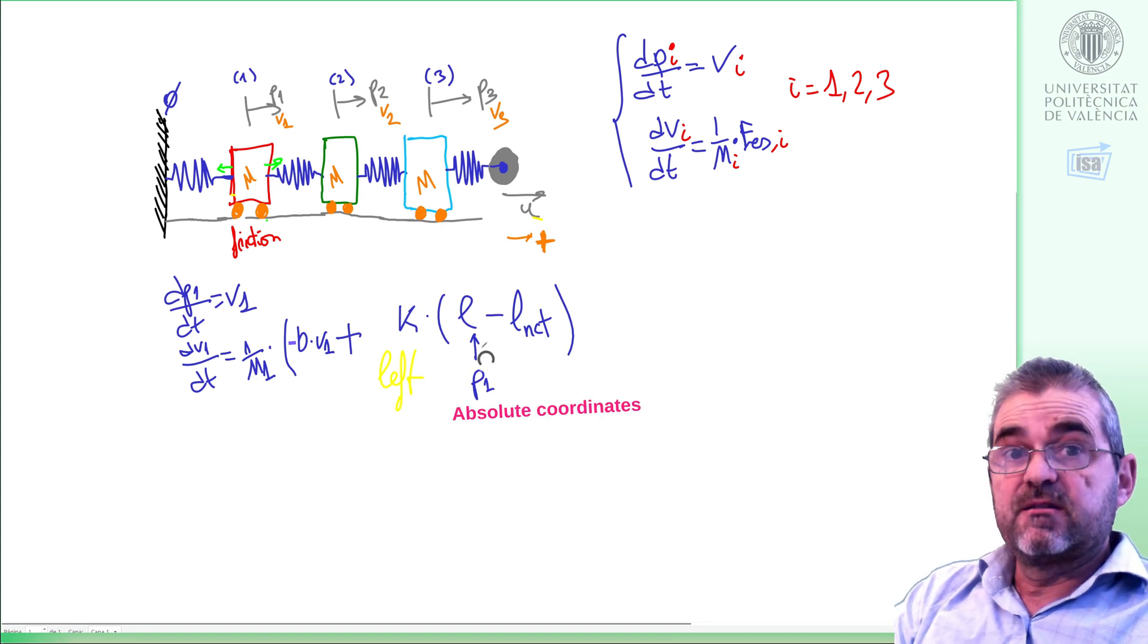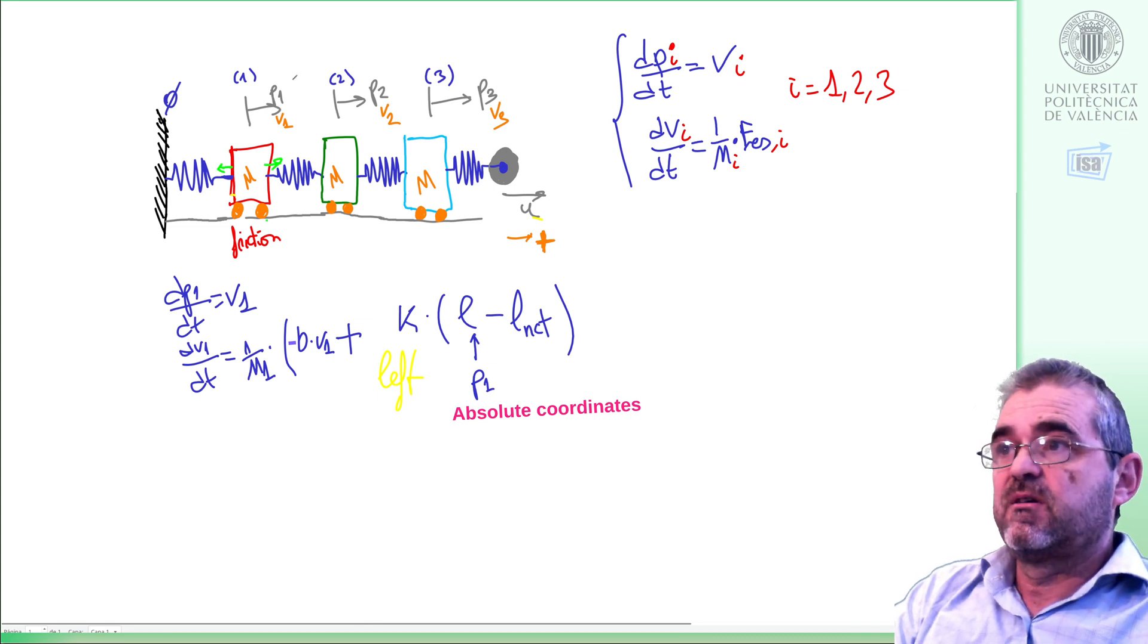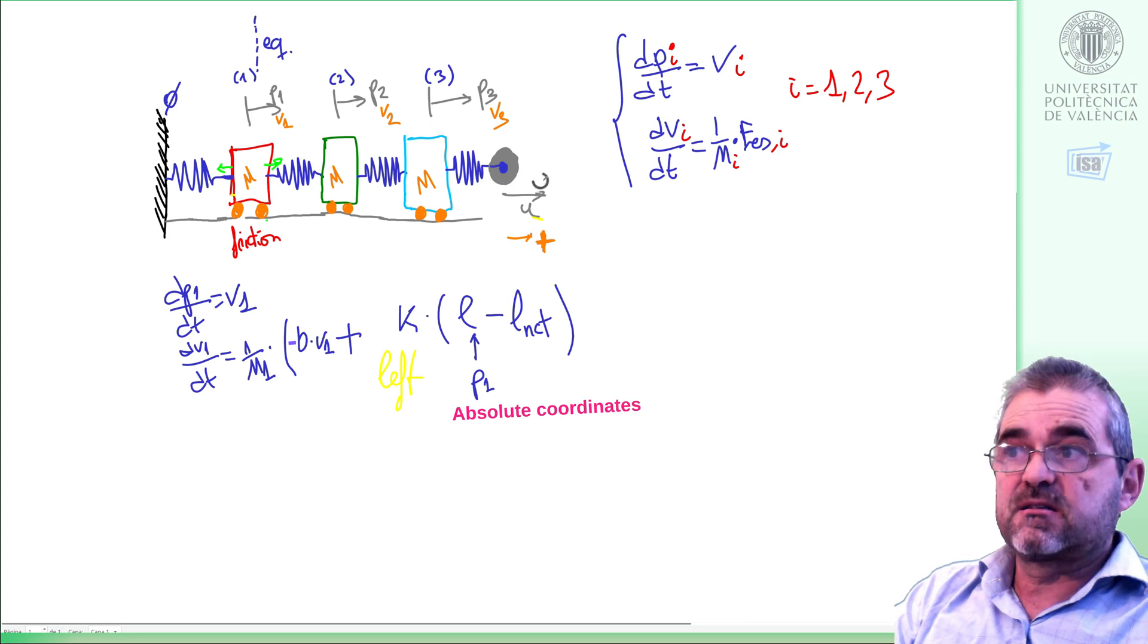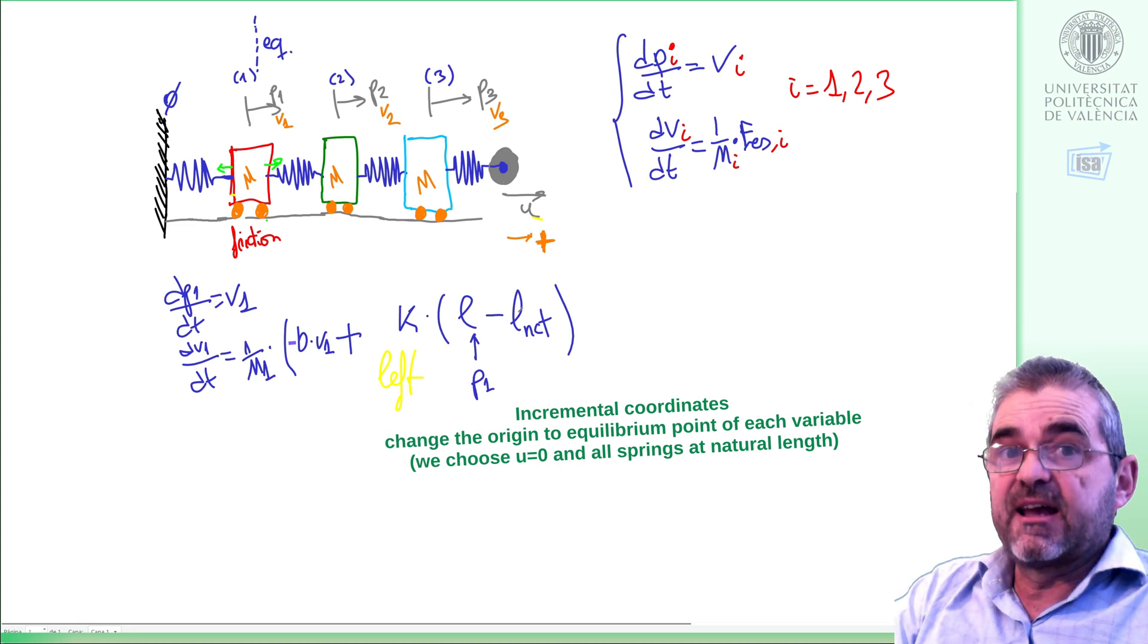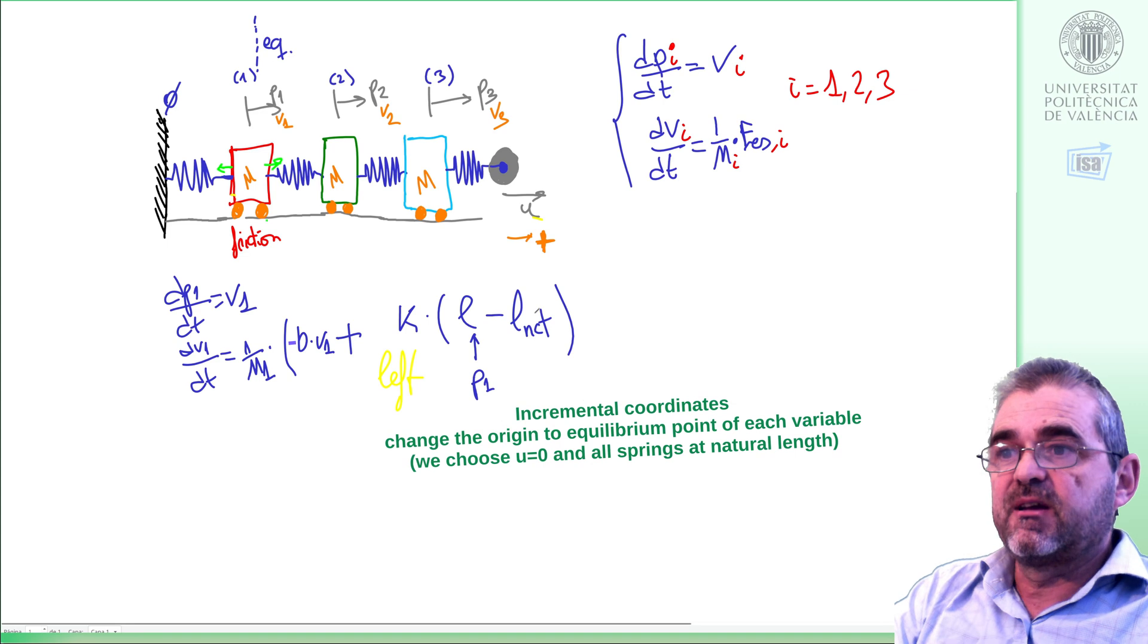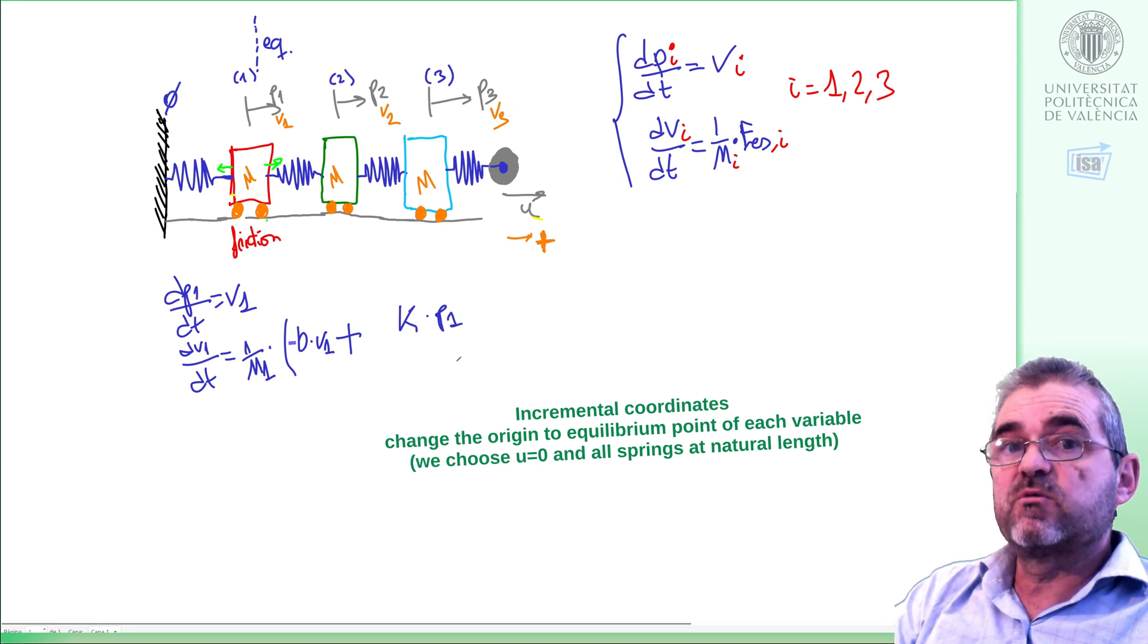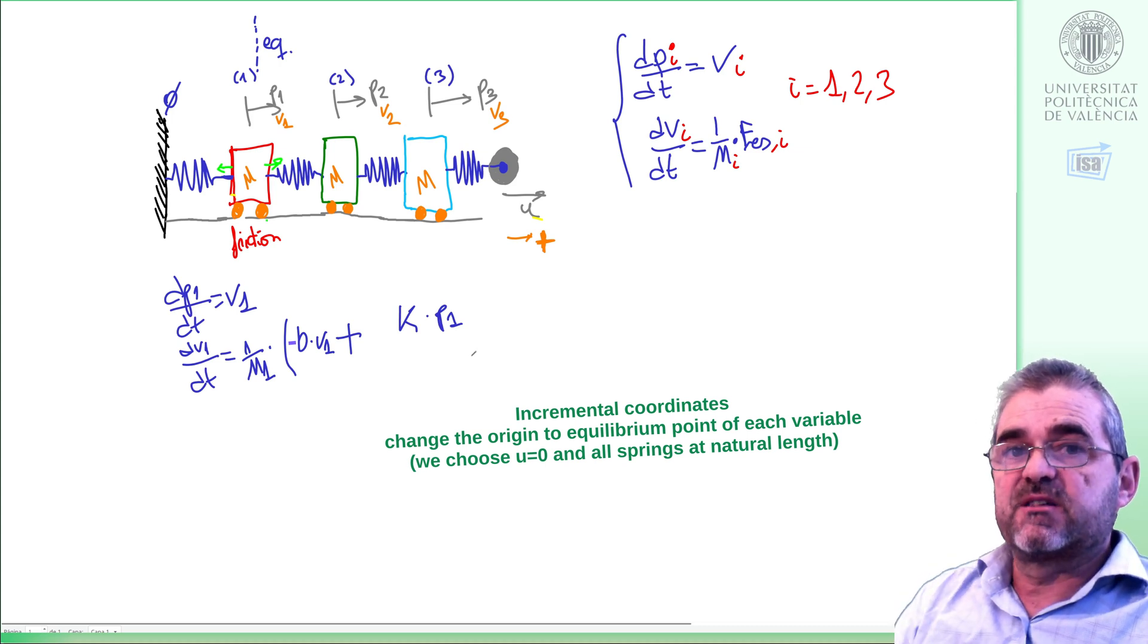However, this is correct if we work in what we call absolute coordinates, but we are going to work in incremental coordinates. The origin of P1 will be the equilibrium position when the spring is at its natural length. So, when we think in these incremental coordinates, or linearized models, then constants do not have increments, and constants get out of our model. So, instead of putting this in absolute coordinates, we will just write K P1, and hence our model will be valid only if P1 is the increment with respect to the equilibrium position in which everything is stopped and springs exert no force. But with that reference system, why not? We choose it.